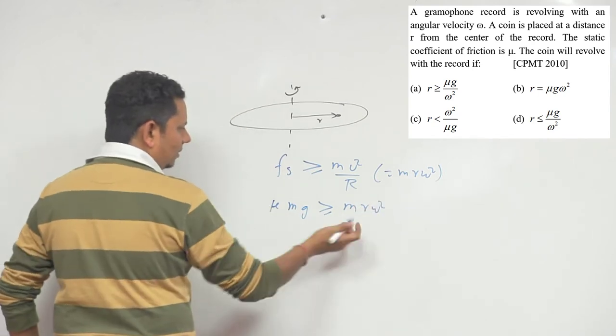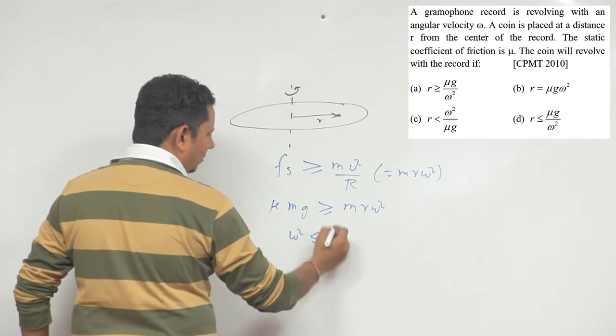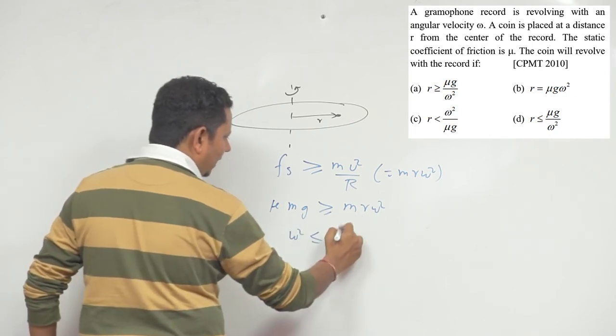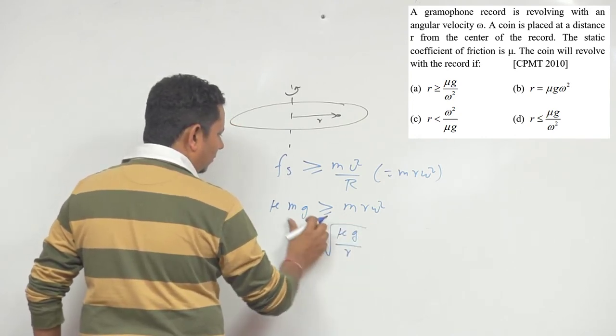Canceling m from both sides, we get ω² ≤ μg/r.